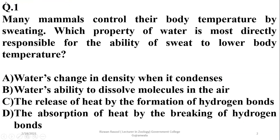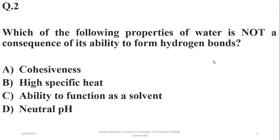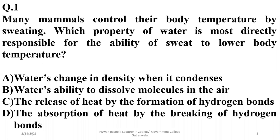Question number one: Many mammals control their body temperature by sweating. Which property of water is most directly responsible for the ability of sweat to lower body temperature? Sweating — transpiration and temperature lowering — is due to heat of vaporization. Heat is absorbed by the water as it converts from liquid to gas form, which is actually absorption of heat by the breaking of hydrogen bonds.